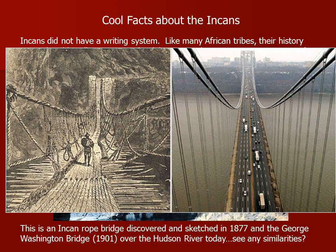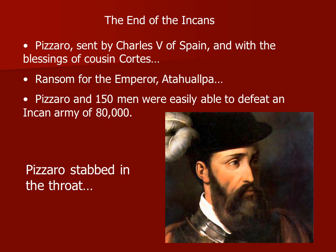In 1877 a rope bridge was discovered that was sketched and documented. An architect used that sketch of the Incan bridge design to build the George Washington Bridge — a suspension bridge still standing today over the Hudson River valley. Prior to using this design, suspension bridges in America often failed in crosswinds, flipping and dropping people and cars. Once they adopted the Incan version, it worked. So the Incas' engineering is still influencing us today.